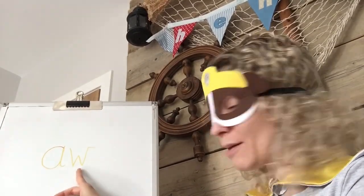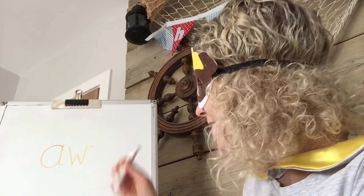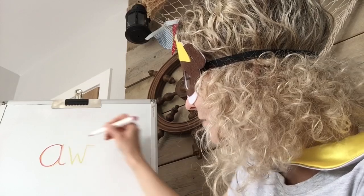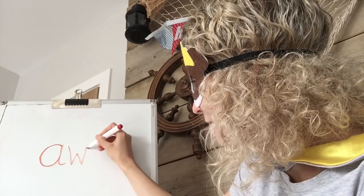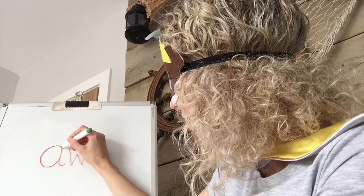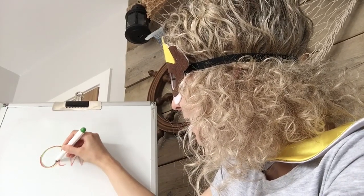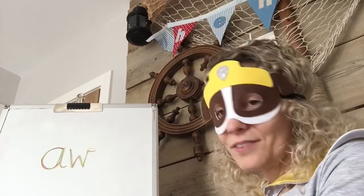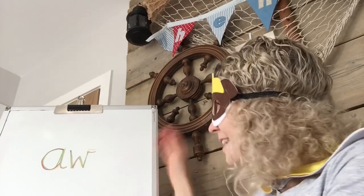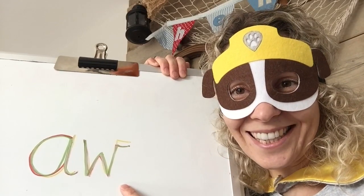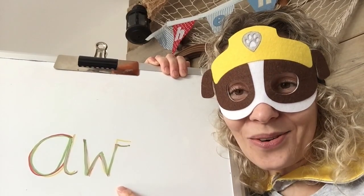So let's have a go at writing them. Here we go — we're going to go around, up and down for the A. And down, up, down, up, flick for the W. I'm going to try it in Rocky's colour green now. So we go around, up and down for the A. Down, up, down, up, flick for the W. My turn: aw. Your turn: aw. My turn: aw. Your turn: aw.